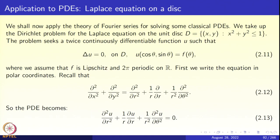Let us now look at applications to partial differential equations, specifically Laplace's equation on a disk. We apply the theory of Fourier series to study classical differential equations. The two-dimensional Laplace's equation is ∂²u/∂x² + ∂²u/∂y² = 0, and we work with the unit disk x² + y² ≤ 1.